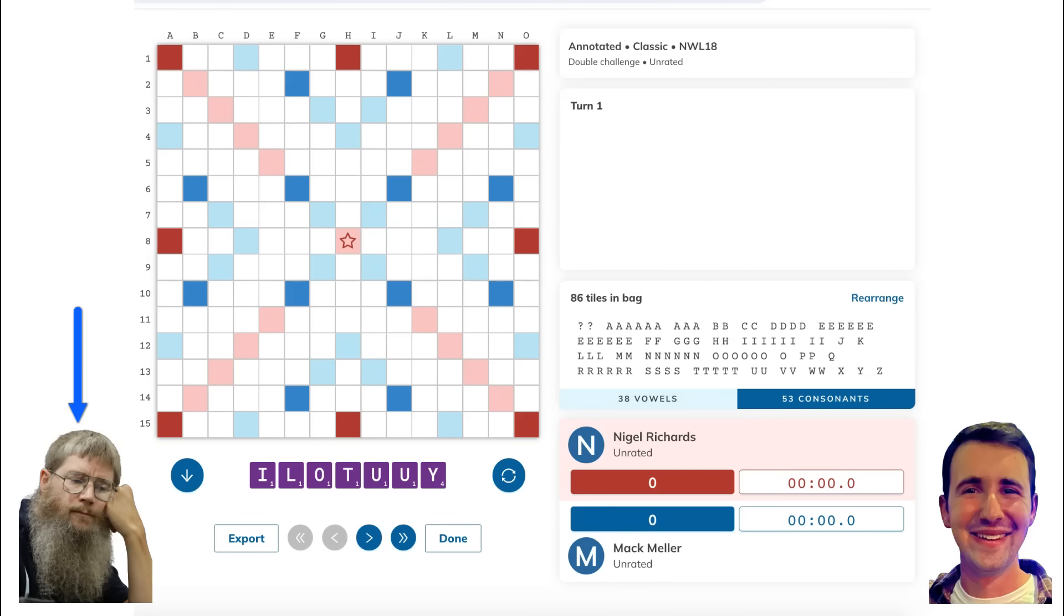So something you might do would be exchange five tiles, getting rid of L-O-U-U-Y, keeping the I and the T. However, that's not what Nigel did either. He did exchange, but instead of keeping I-T, he kept I-L-T-Y on his rack, trading just three tiles, the O and both of his U's. Now, this looks very counterintuitive at first, because the Y is not a good bingo tile. Normally, if you're trying to bingo, which like I said, you're typically trying to do early in the game if you can, the Y is not going to help you. So why did Nigel do this?